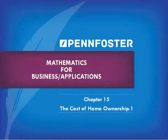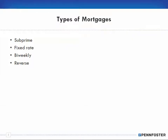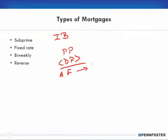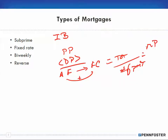As I mentioned at the end of the summary practice test video, the cost of home ownership is very similar to Chapter 14, which was installment buying. When we talked about installment buying, you had a purchase price, then a down payment, so then you had an amount financed. From that amount financed, you figure out the finance charge or interest, and when you add the two together, that gives you the total amount you'd end up paying back.